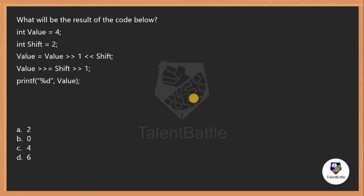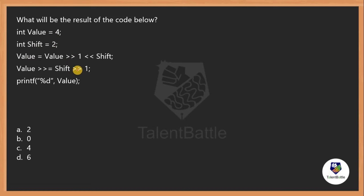Next question: what will be the result of the code below? The variable 'value' is initialized to 4, 'shift' is initialized to 2, and we calculate 'value' based on bitwise operators — specifically left shift and right shift. The expected output is one of: 2, 0, 4, or 6. Let's calculate step by step.